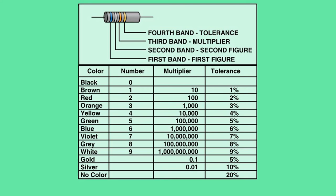The resistor on the top left of this diagram has four bands, which is typical. The first band is blue, which corresponds to the number 6. The second band is white, which corresponds to the number 9. The third band is orange, which indicates that we are to multiply the first two numbers by 1,000. The fourth band is gold, which indicates a tolerance of plus or minus 5%. This tells us this resistor has a value of 69,000 ohms plus or minus 5%.